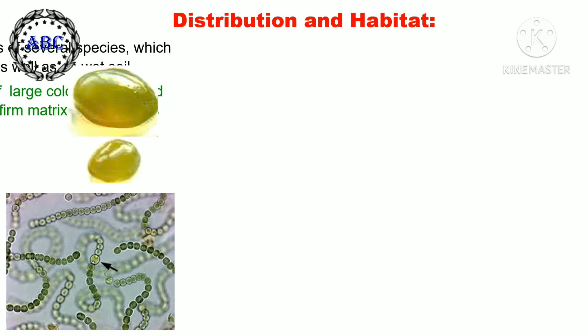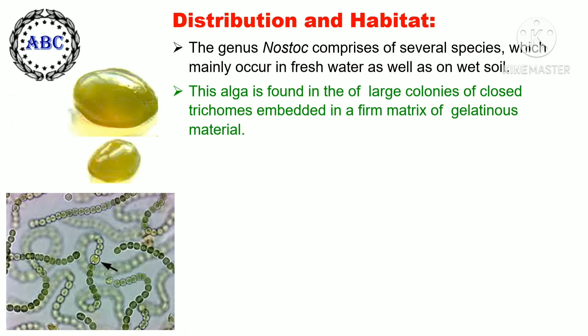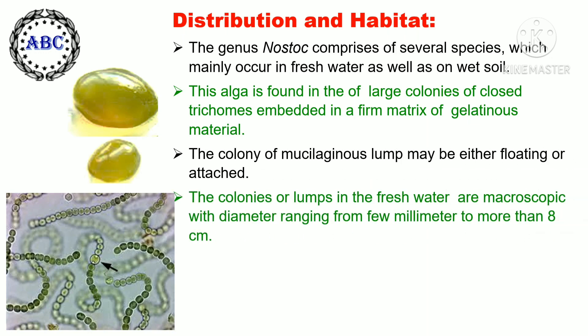In distribution and habitat, the genus Nostoc comprises several species which mainly occur in fresh water as well as on wet soil. This alga is found in large colonies of coiled trichomes embedded in a firm matrix of gelatinous material. The colony or mucilaginous lump may be either floating or attached to the substrate.